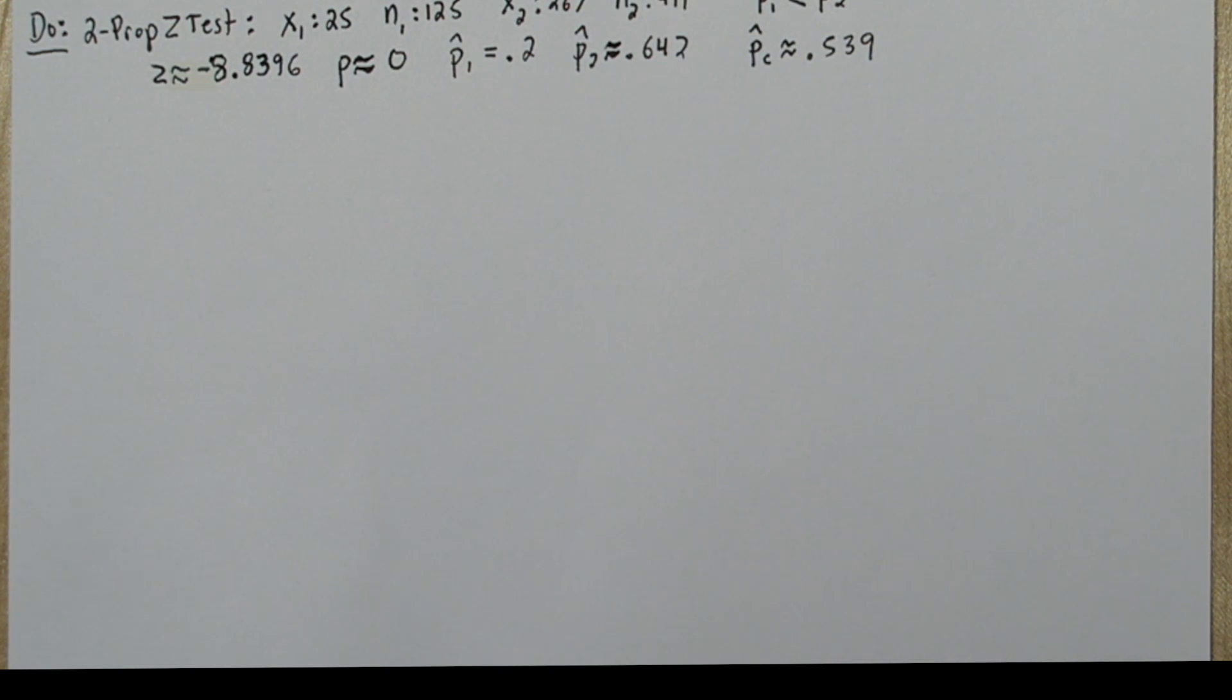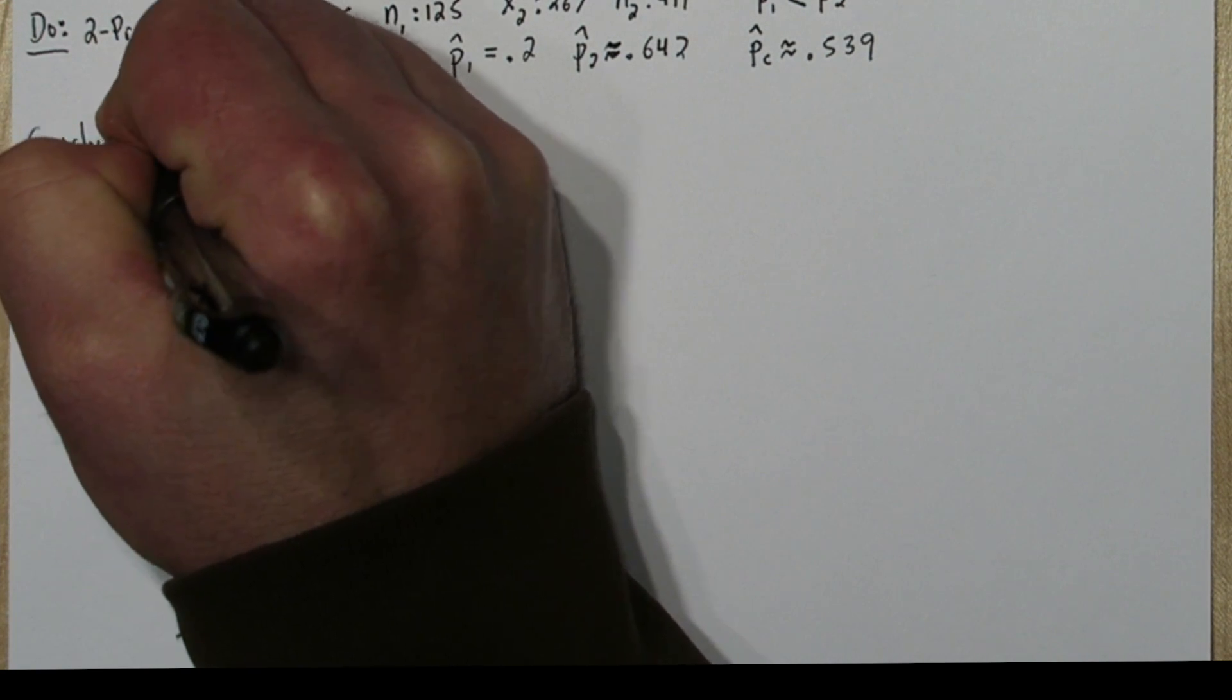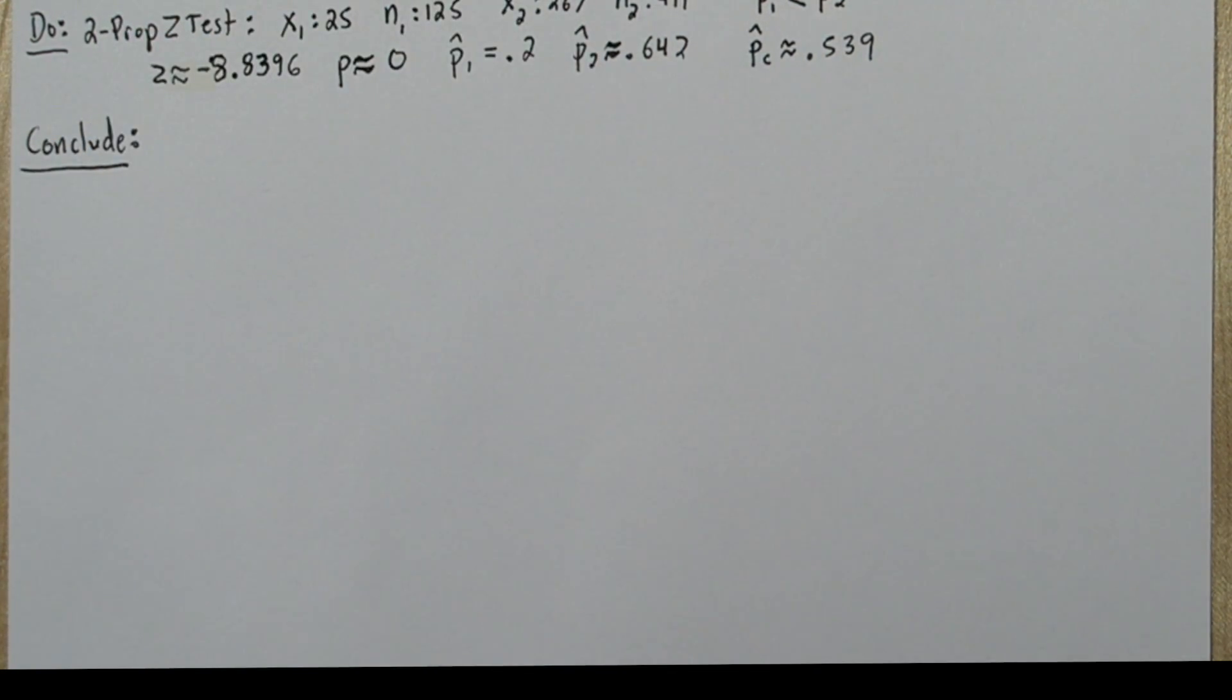So overall, about 53.9% of the bat houses, regardless of their mounting type, were occupied by bats. That p-value of close to 0 means if the null hypothesis is true, so if there's no difference between the success rates of the tree-mounted and building-mounted bat houses, the probability of us getting sample proportions this different is almost 0. It's almost impossible. So it's much more likely the null hypothesis is not true, and that the building-mounted bat houses are more successful.